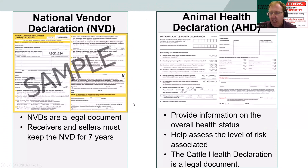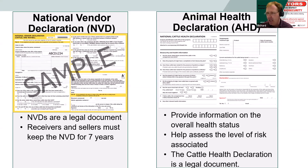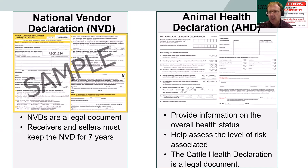A key part of inputs is documentation. NVDs — National Vendor Declarations — are pretty standard across Australia, particularly if you're part of LPA. For cattle, sheep, and also goats, you can get NVDs. NVDs are a legal document — receivers and sellers must keep the NVD for seven years in Victoria, and I think similar legislation applies nationwide; if you're unsure, check with your state agency.